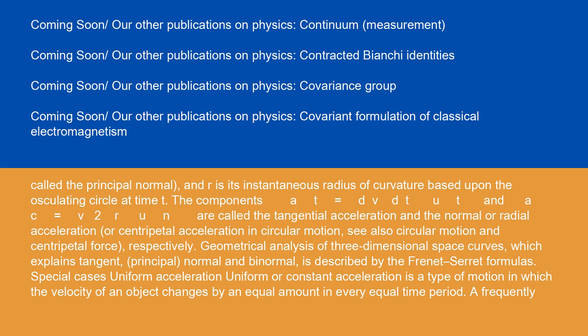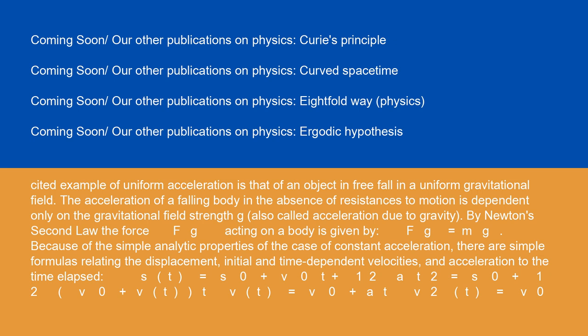Uniform or constant acceleration is a type of motion in which the velocity of an object changes by an equal amount in every equal time period. A frequently cited example of uniform acceleration is that of an object in free fall in a uniform gravitational field. The acceleration of a falling body in the absence of resistances to motion is dependent only on the gravitational field strength g, also called acceleration due to gravity. By Newton's second law, the force Fg acting on a body is given by Fg = mg. Because of the simple analytic properties of the case of constant acceleration, there are simple formulas relating the displacement, initial and time-dependent velocities, and acceleration to the time elapsed.